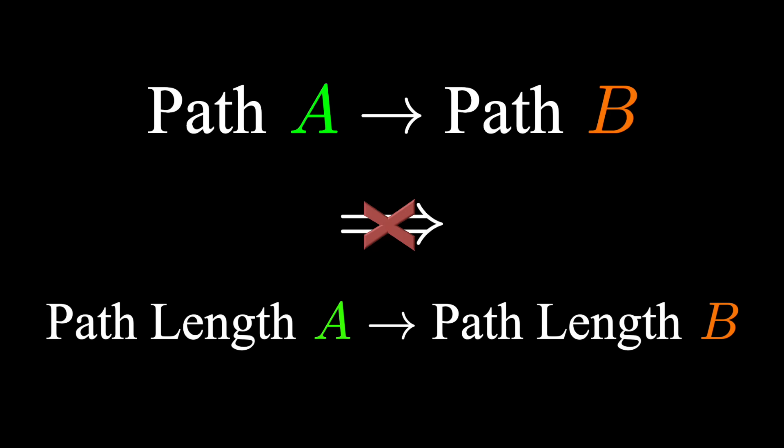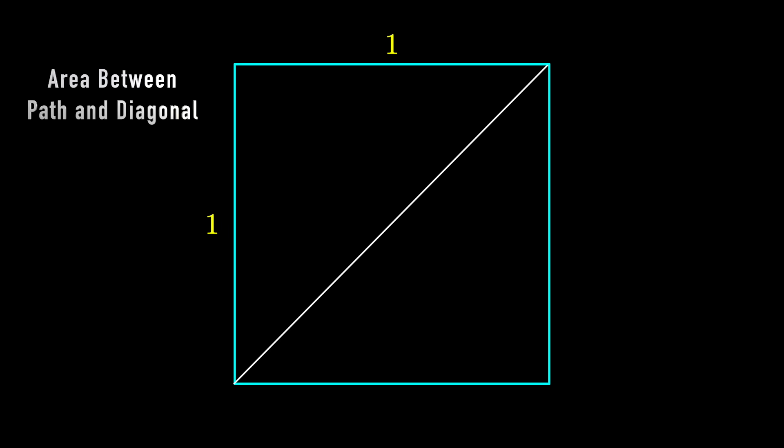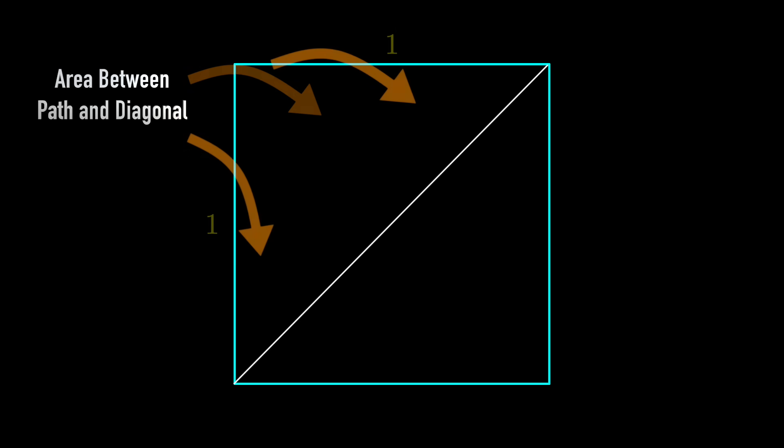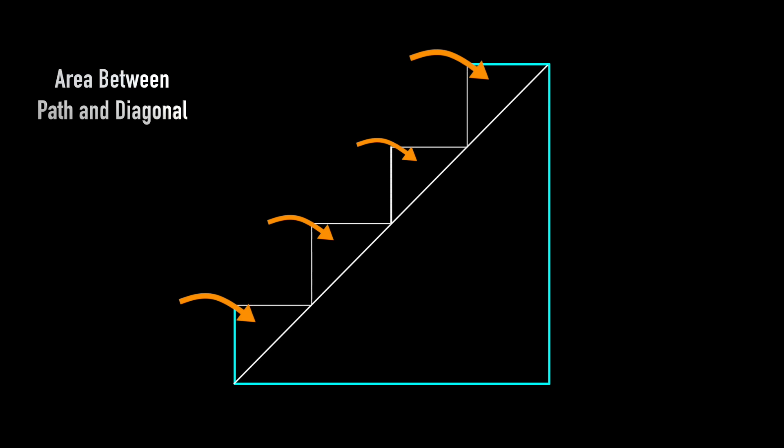How can we mathematically show this? We can say that the staircase path approaches the diagonal by looking at the area between them. If this area shrinks to 0, we'll say that the staircase path approaches the diagonal path. Let n be the number of iterations in this process.